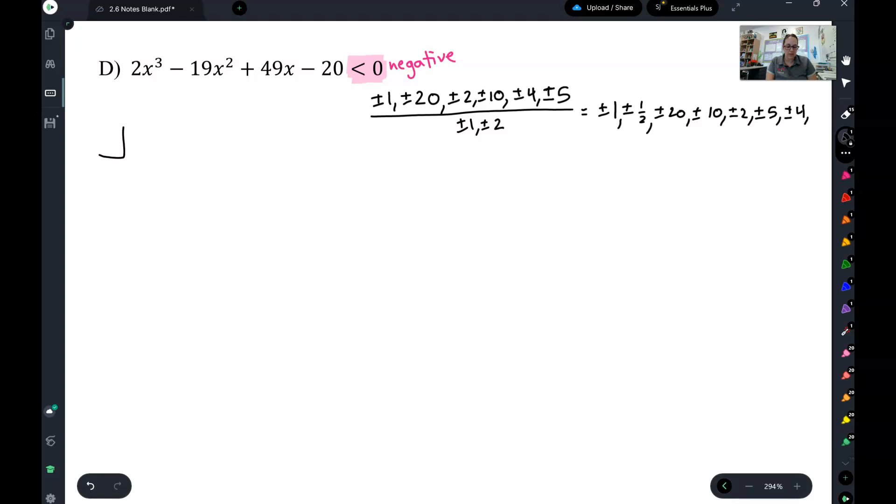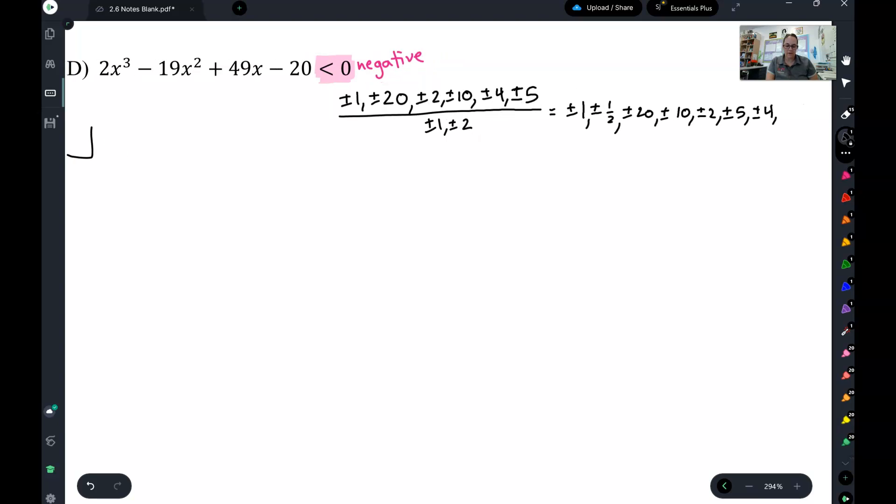10 divided by 2 is 5. 4 divided by 1 is 4. Don't have that one yet. And 4 divided by 2 is 2. Already got that one in my list. 5 divided by 1 is 5, which I already have right there. And 5 divided by 2 is 5 halves.